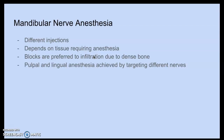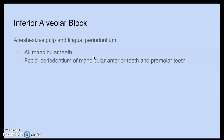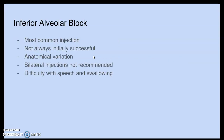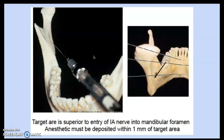Mandibular anesthesia uses different injections depending on the tissue requiring anesthesia. Blocks are preferred in the mandible due to the dense bone. The IA (inferior alveolar) block anesthetizes the pulp and lingual periodontium of all mandibular teeth, and the facial periodontium of the mandibular premolar teeth. It's the most common injection but not always initially successful due to anatomical variation. Bilateral injections are not recommended as they cause difficulty with speech and swallowing.